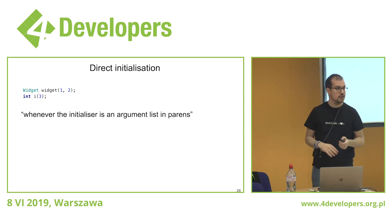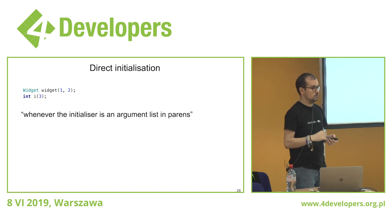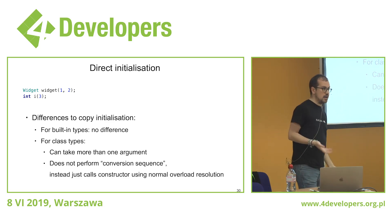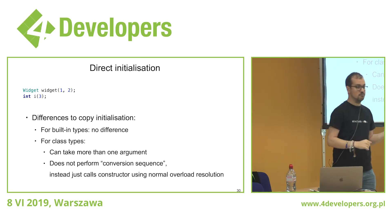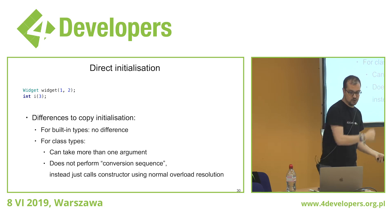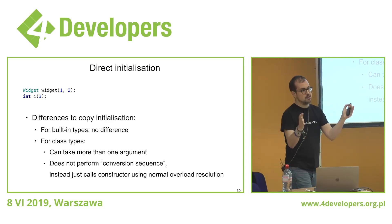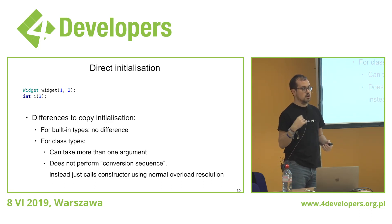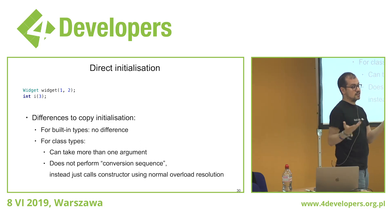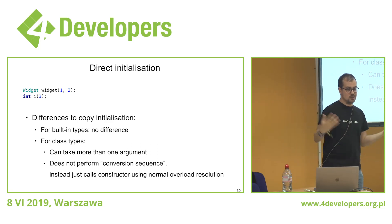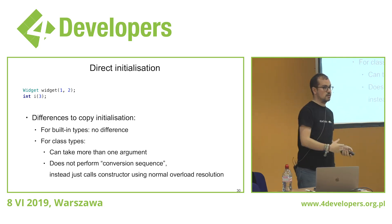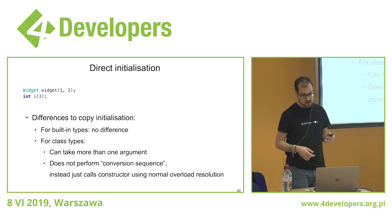There are differences between direct initialization and copy initialization. For built-in types like integers, floats, and bools, they do the same thing. For classes, direct initialization can take more than one argument — that's the syntax you need to call constructors with multiple arguments. Also, direct initialization doesn't perform a conversion sequence like equals-value does. Instead, it uses overload resolution rules to call the constructor. Because the parens look like a function call, it treats a constructor like a regular function call — it looks at the constructors and uses normal C++ overload resolution rules to find and call the one you want.